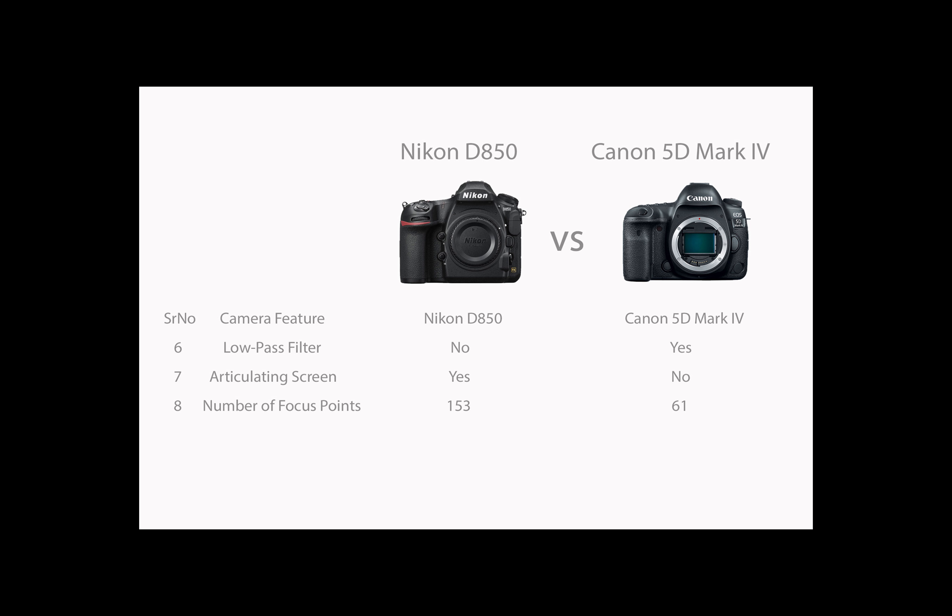Nikon D850 has 153 focus points, whereas Canon 5D Mark IV has 61 focus points. A large number of focus points allows them to be packed densely so that a moving target moves smoothly from one point to the next without falling in the gap.